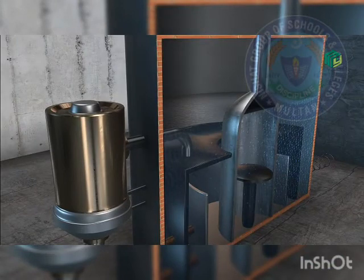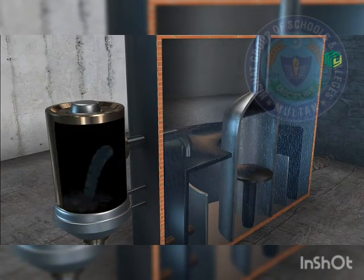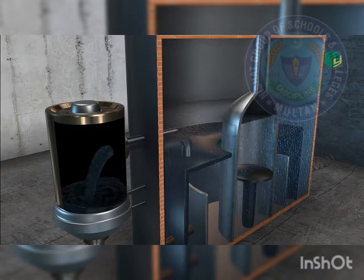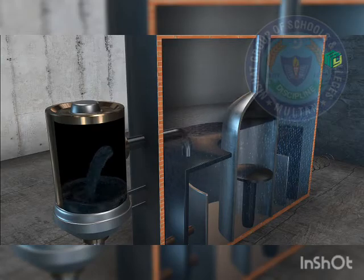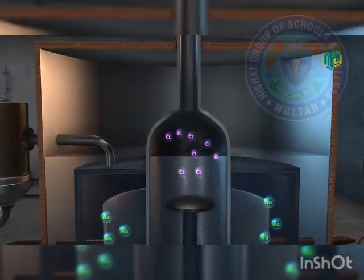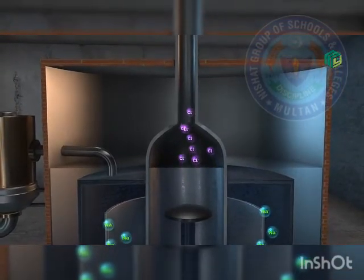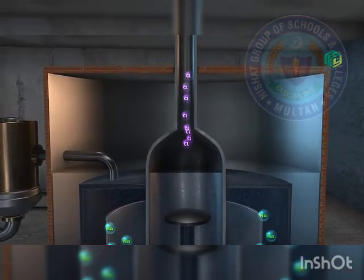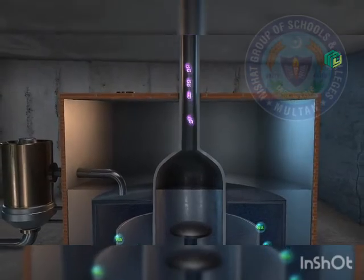Sodium metal ko collect kar liya jata hai side tube mein. Yeh aap dekhen hain kya hai side tube jismein molten sodium metal ko collect kar liya jata hai. Aur chlorine gas ko collect kiya jata hai kahan par? Inverted cone shape structure mein jo ki kahan par maujud hoti hai anode ke upar.